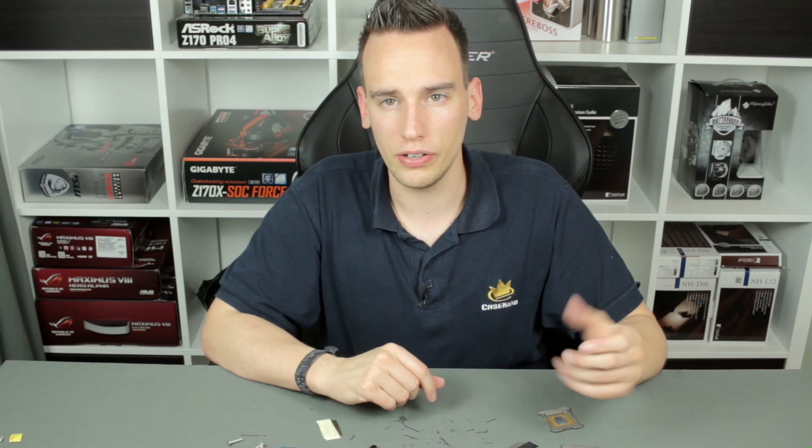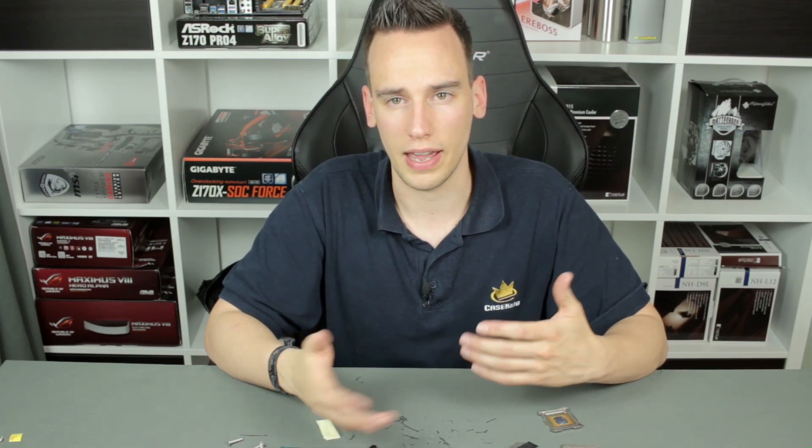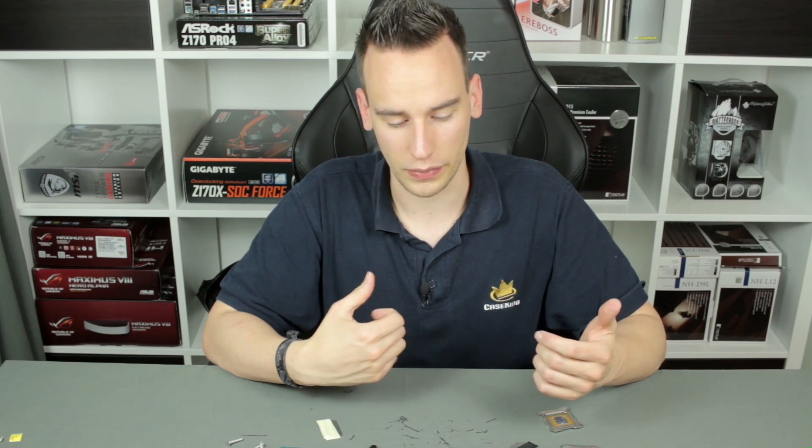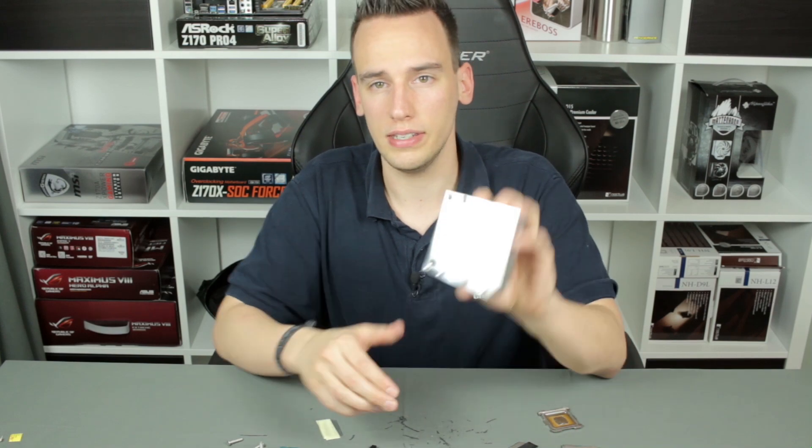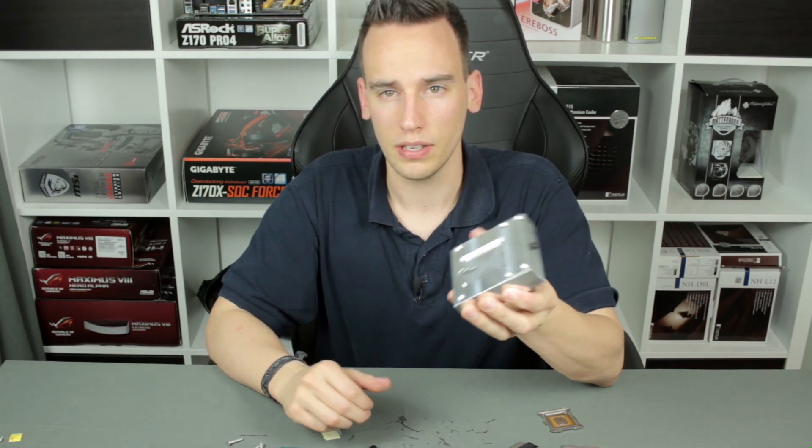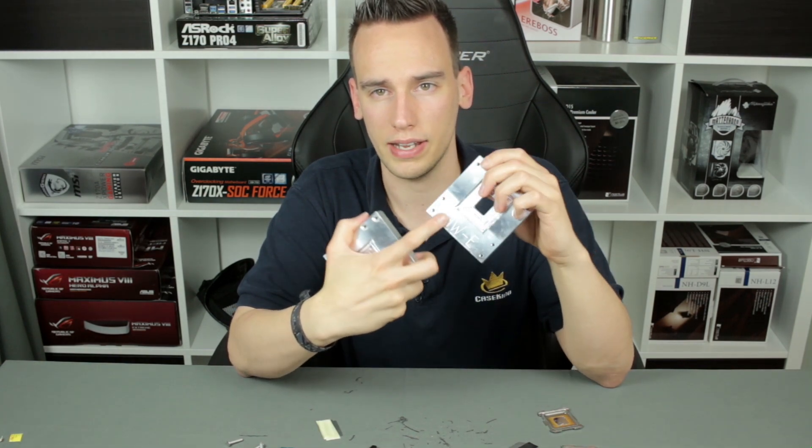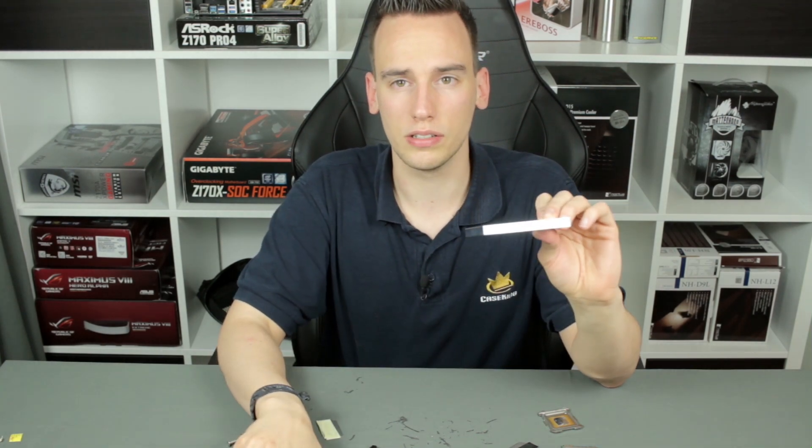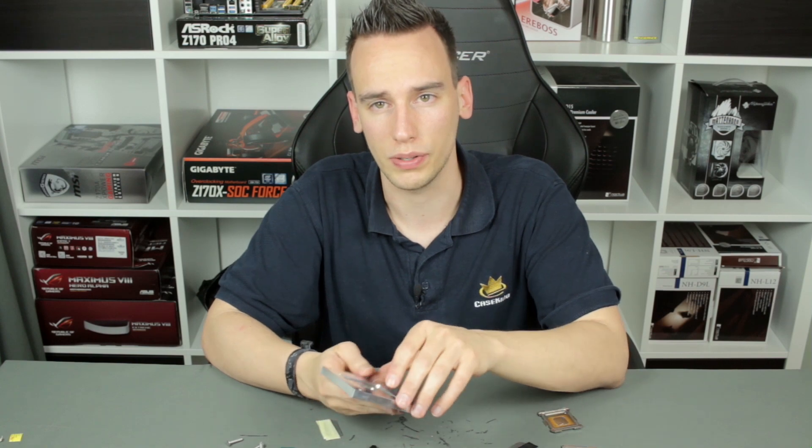You probably know my Delidimate which I invented over half a year ago. The tool was made for delidding normal CPUs like Haswell and Skylake CPUs. Now you can see the Delidimate Extreme. This time it's a little bit bigger, made out of aluminum, and it's made for Broadwell-E and Haswell-E. I already tested the tool last week with a 5960X Core i7 Haswell-E CPU.